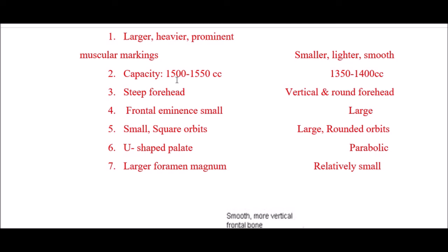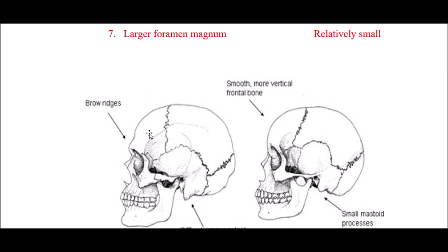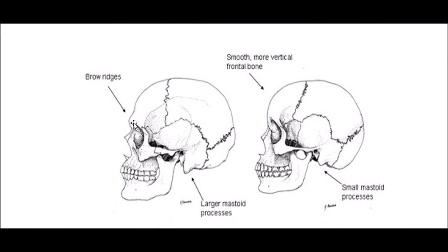The capacity of the male skull is around 1500 to 1550 cc, while the female is around 1350 to 1400 cc. The forehead is steep in males and vertical and round in females. Frontal eminences are small in males but large in females. Male skulls have small and square orbits; females have large and round orbits. The palate is U-shaped in males and parabolic in females. The male skull has a larger foramen magnum and larger mastoid process with more prominent bony margins.